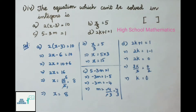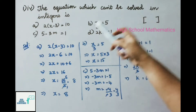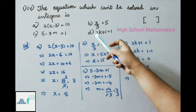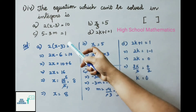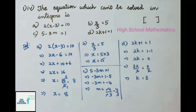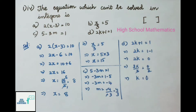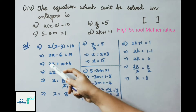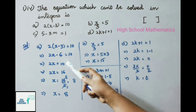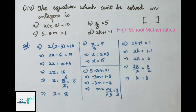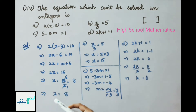Fourth question: the equation which can't be solved in integers. Options: A) 2(x - 3) = 10, B) x/3 = 5, C) 5 - 3m = 1, D) k + 1 = 1. First equation: 2(x - 3) = 10 → 2x - 6 = 10 → 2x = 16 → x = 8, which is an integer.